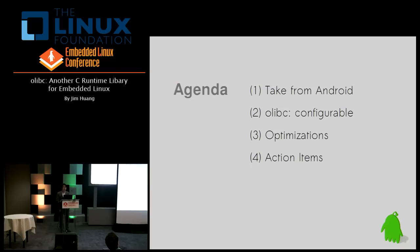There are four parts in my talk. First, we'll analyze how we can benefit from Android. Then we'll look at a new project I call OLIBC. The project goal is to be configurable. We'll also apply some optimization techniques. The last part covers action items — things I haven't completed yet.